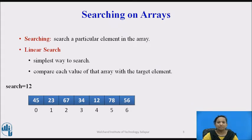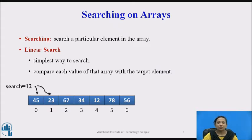As per the linear search algorithm, 12 is first compared with the first element in the array. So 12 is compared with 45. Here 12 is not equal to 45, therefore search will continue to the next element if present. The next element is 23, so 12 is compared with 23. It is not equal, then continued and 12 is compared with 67. So 12 is not equal to 67.